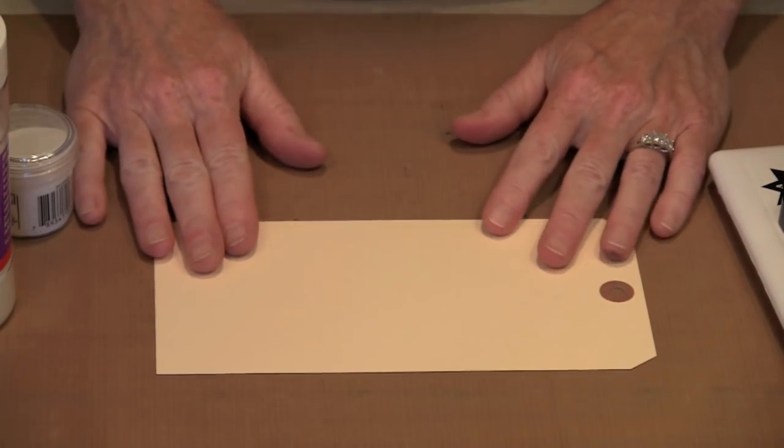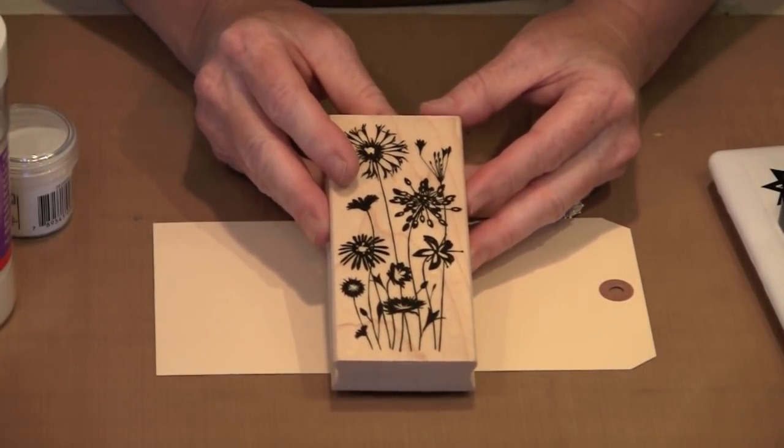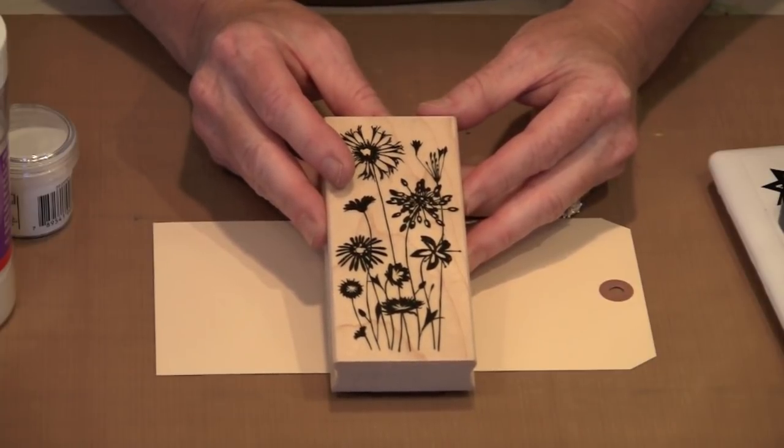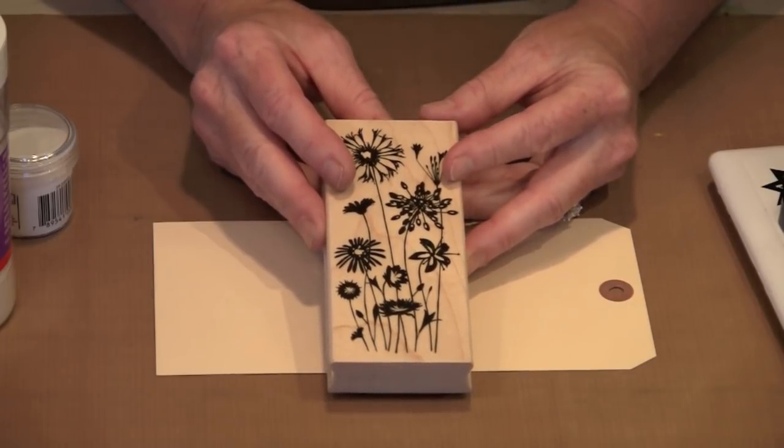I have a big tag and I have one single stamp. This is a Hero Arts stamp. And I'm going to actually emboss this stamp three different times. Once with the Superfine, once with the regular embossing powder, and then once with the UD. But you'll notice when I jump up to the UD, I'm actually going to go to the black ink and that big embossing pad.